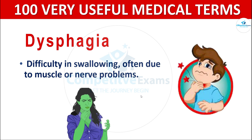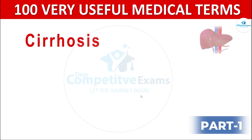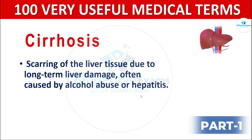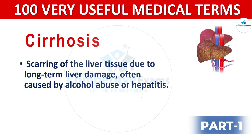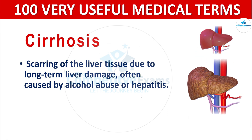Next term: cirrhosis. Cirrhosis is scarring of the liver tissue due to long-term liver damage. It's often caused by alcohol abuse or hepatitis.